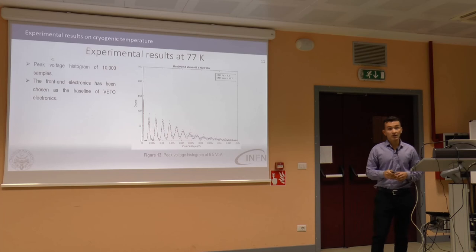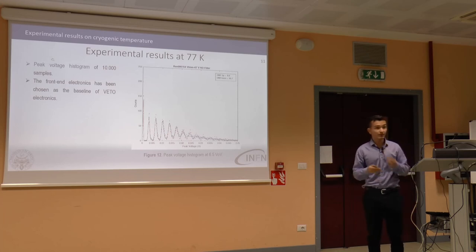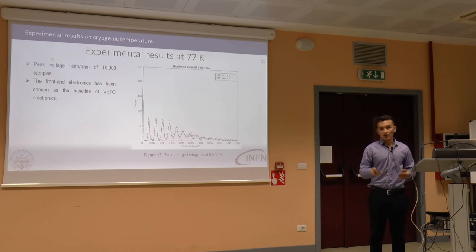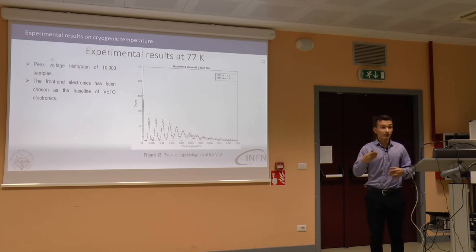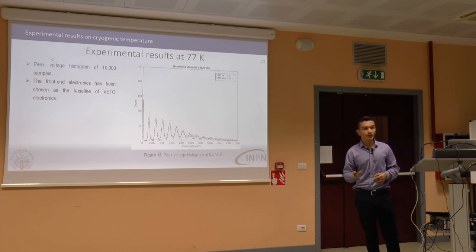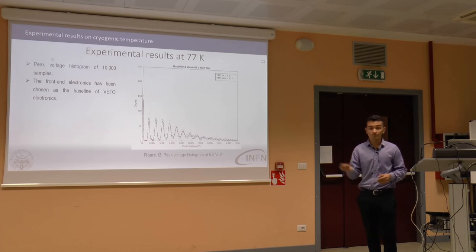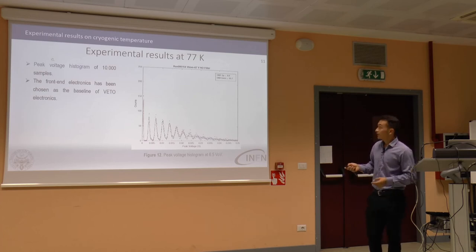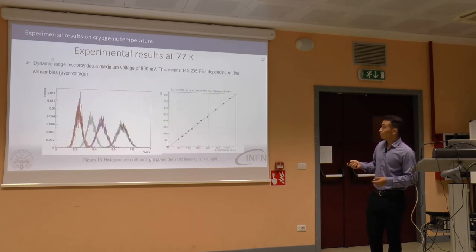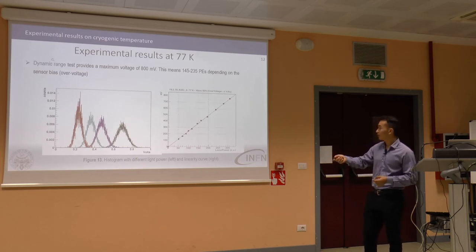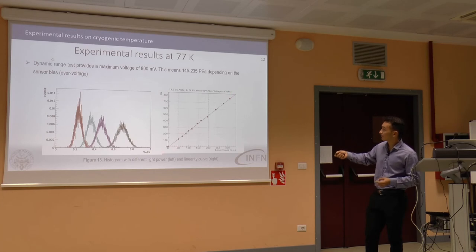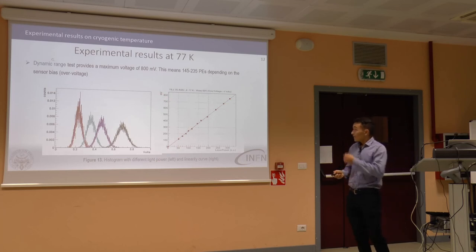This prototype front-end electronics has been accepted and chosen as the baseline design for the experiment. It will be implemented in the final prototype of the experiment, which will be operational in a couple of years. This dynamic range test checks how many photoelectrons can be processed by the electronics — around 800 millivolts of output swing.